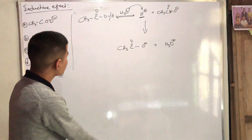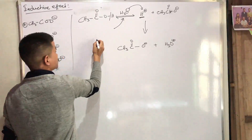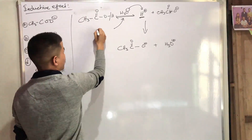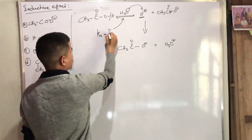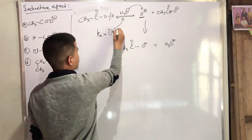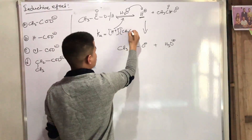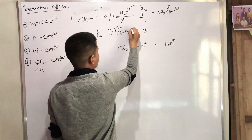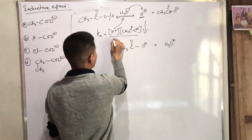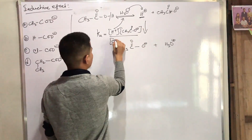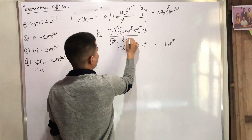Ionization constant. The ionization constant expression is: Ka = concentration of H+ multiplied by concentration of CH3COO minus, divided by concentration of CH3COOH.